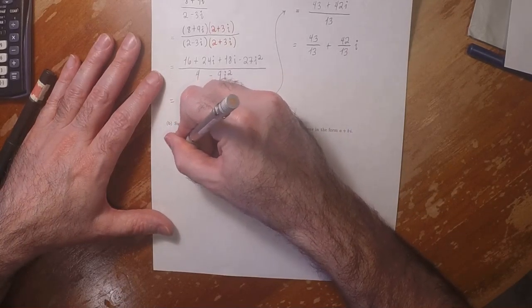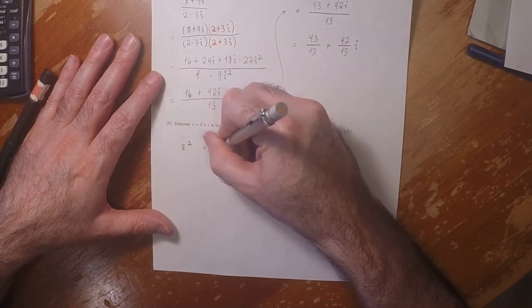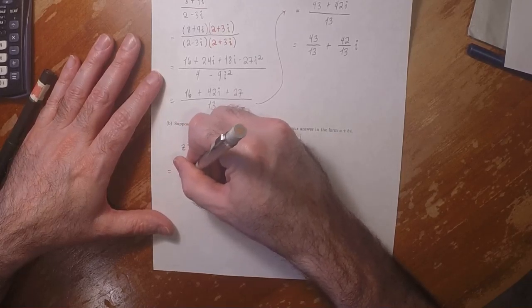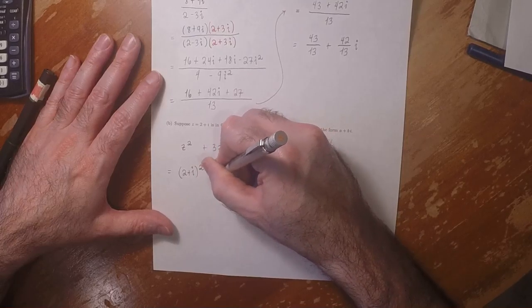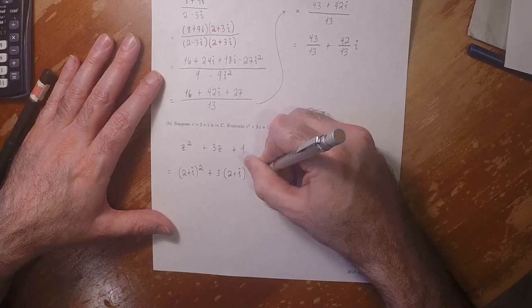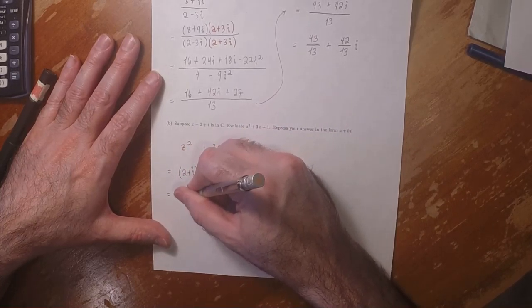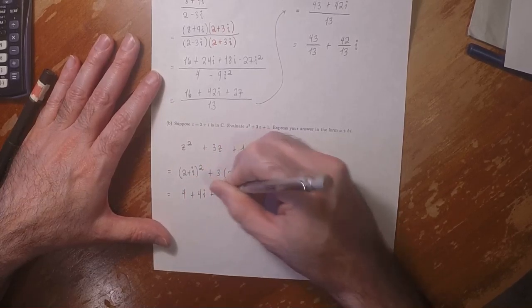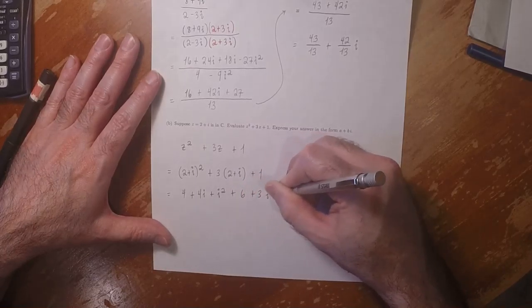So z squared plus 3z plus 1, where z equals 2 plus i. That's 2 plus i squared, plus 3 multiplied by 2 plus i, plus 1, which is 4 plus 4i plus i squared plus 6 plus 3i plus 1.